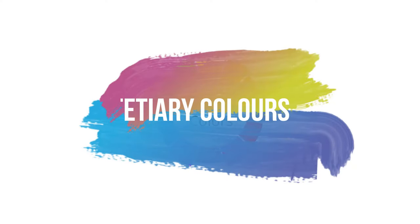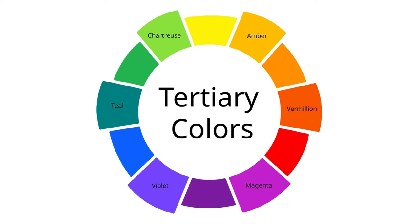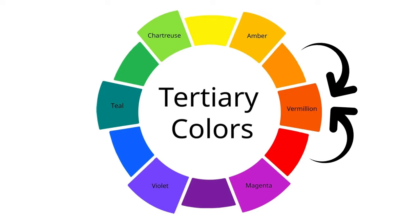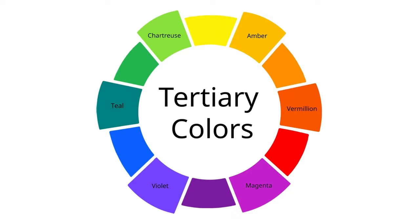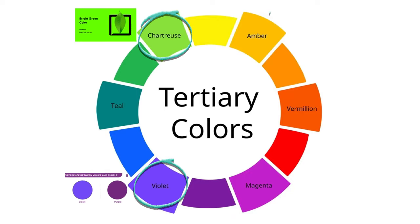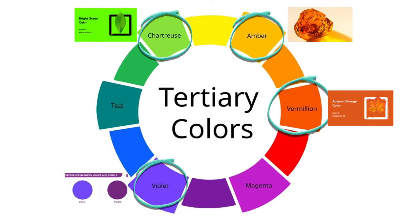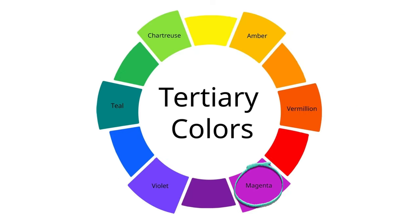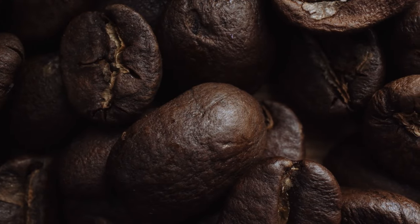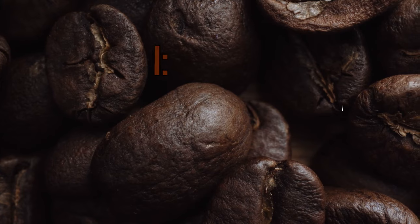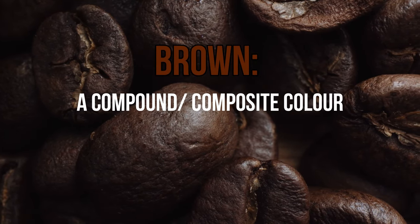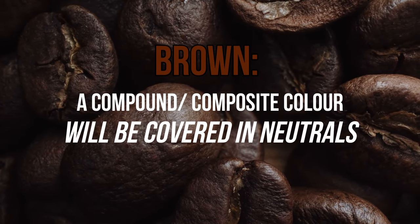Tertiary or intermediate colors are made by combining both a secondary and a primary color. Due to covering associated colors throughout, many tertiaries have been covered incidentally. But two still need specific coverage: magenta and the aqua family. Brown, though considered by some as a tertiary color, is not — it is a compound or composite color and will be covered in neutrals.